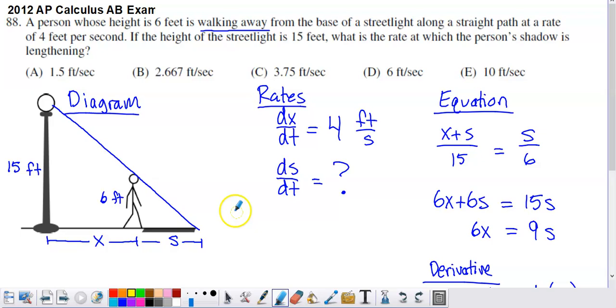Similar triangles are going to have proportional side lengths. And so what I did is I took the ratio of the bottom leg of the bigger triangle, which was measuring X plus S, divided by the vertical leg of the bigger triangle, 15. I equated that with the smaller